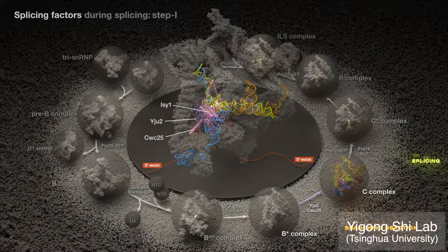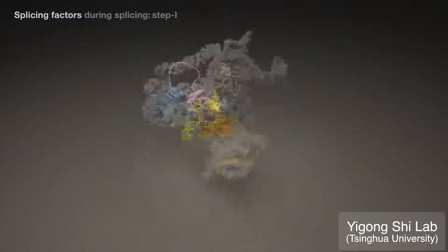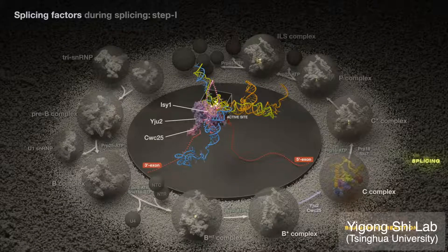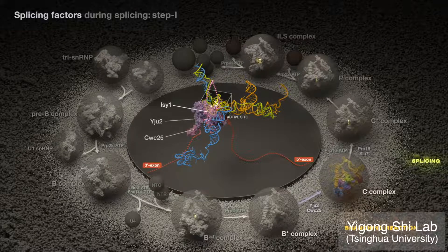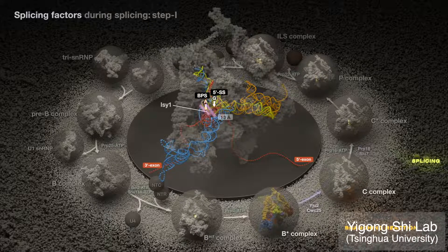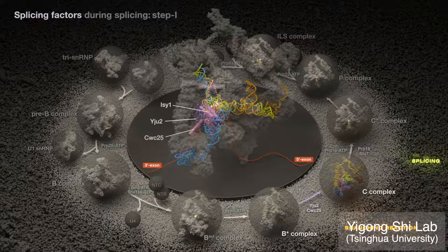Dynamic splicing factors facilitate splicing by the spliceosome, in part by stabilizing the active site. In a progressive manner, step 1 proteins insert to help place the branch point nucleophile closer to the 5' splice site scissyl-phosphodiester bond for branching.